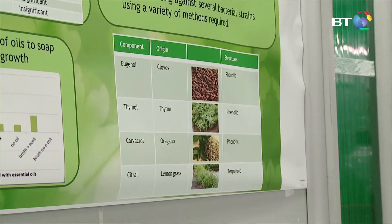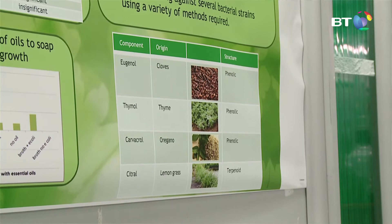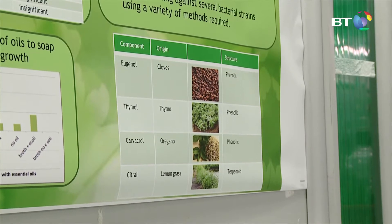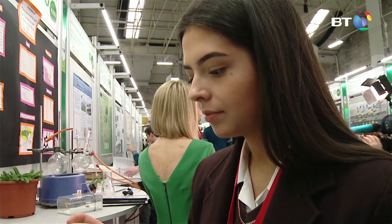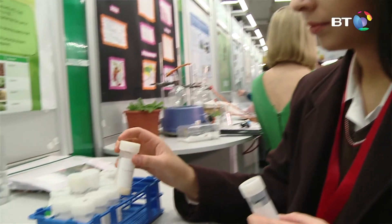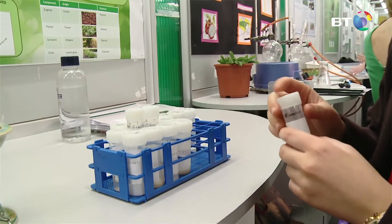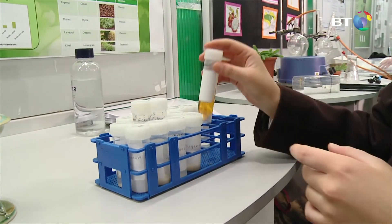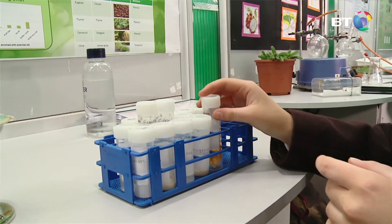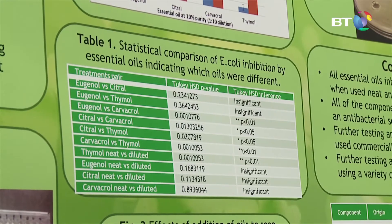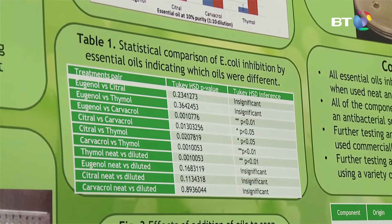I took four components out of essential oils: Eugenol, Citrol, Thymol, and Carvacrol, and I tested them against the bacteria E. coli and Listeria to see if they pose any inhibitory effects on their growth. My plan was to develop a soap out of these components if they showed antibacterial properties.